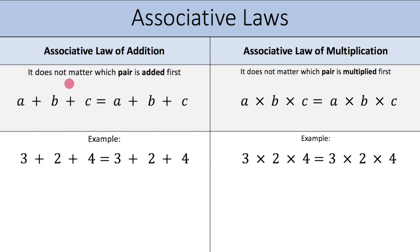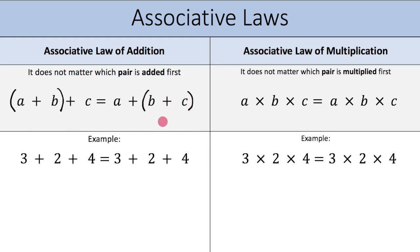What this law tells me is that it does not matter which pair is added first. So here I have a plus b plus c. Now because of order of operations and BIDMAS, if I put brackets around a and b, that's telling me do a plus b first, then plus c. But if I put brackets around b and c, that's saying go b plus c first, then plus a. My associative law tells me these two statements are equal. Make sure you put in these brackets on your slide.